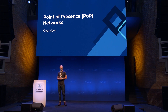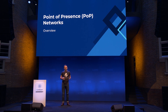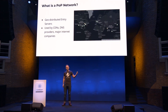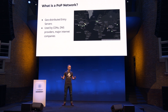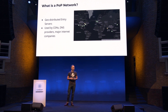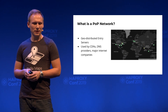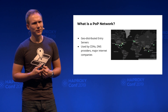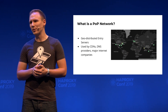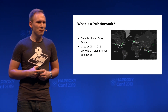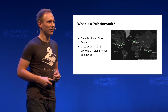That brings me to point-of-presence networks. We've heard about this already, but this is more about how you can build a very simple and cost-effective version. The idea is that you have geo-distributed entry servers — we have eight entry points — these are very small servers that service all the traffic, with all DNS records pointing to a single server closest to the user. This is very frequently used by CDNs, DNS providers, and pretty much any major internet company.